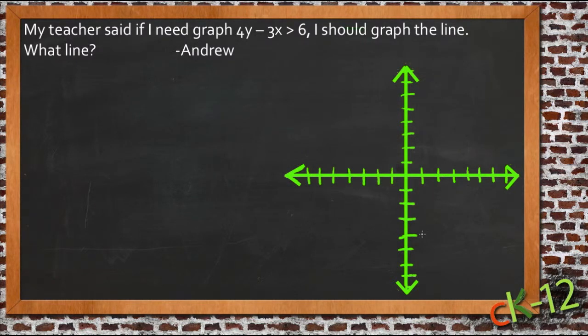Instead of just being a vertical or horizontal line, we're going to have a slanted line. And Andrew sent in a question here that I think applies very well to what we're talking about. He said, my teacher said if I need to graph 4y minus 3x is greater than 6, I should graph the line. What line?